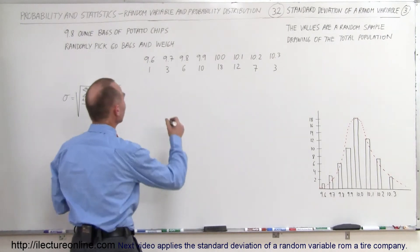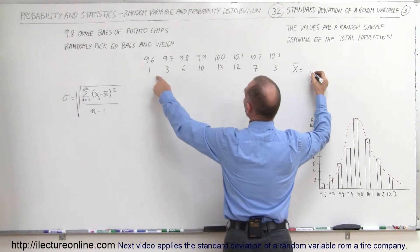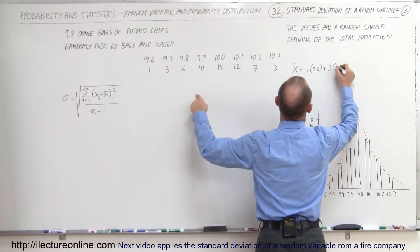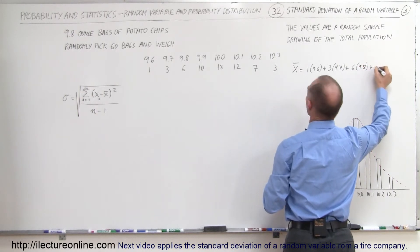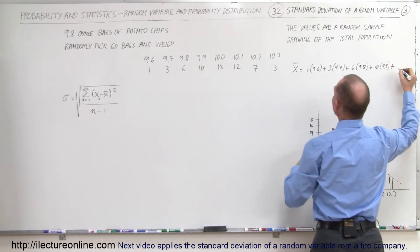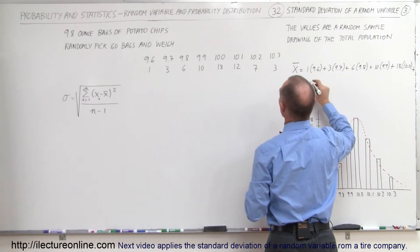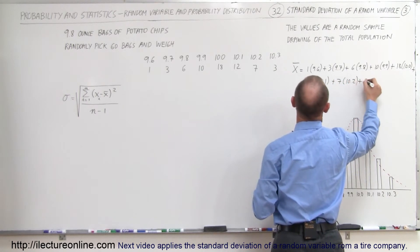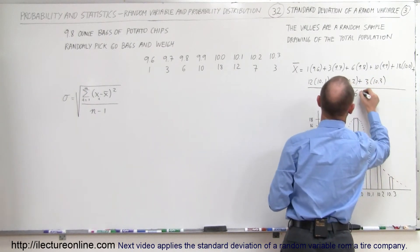We can simplify this: the average value of x equals (1×9.6 + 3×9.7 + 6×9.8 + 10×9.9 + 18×10.0 + 12×10.1 + 7×10.2 + 3×10.3) divided by 60.